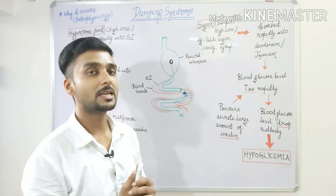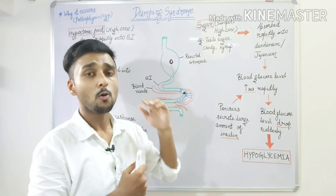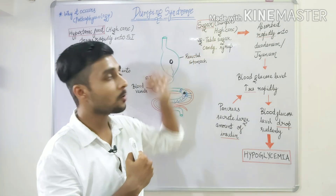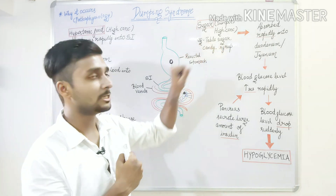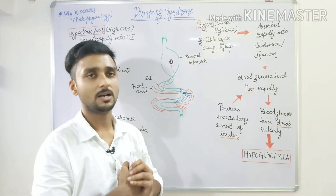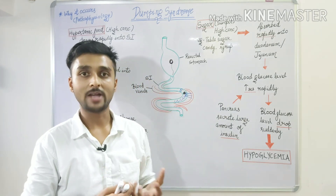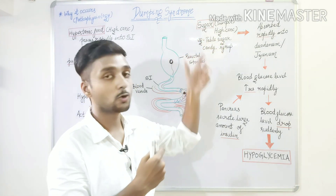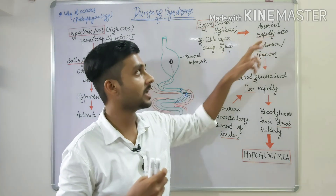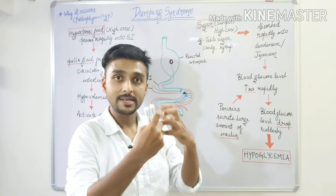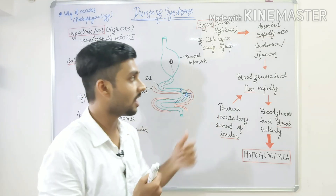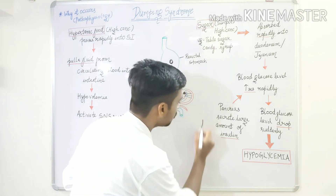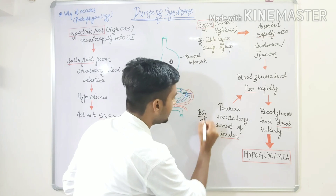The other part of the pathophysiology involves sugar — specifically simple sugar and simple carbohydrates, which are hypertonic foods. Examples include table sugar, sugar candies, and sugar syrup. After consuming these, the food passes directly from the stomach to the small intestine. In the small intestine, the glucose or simple sugar is rapidly absorbed through the duodenum and goes rapidly into the blood, causing the blood glucose level to increase rapidly.